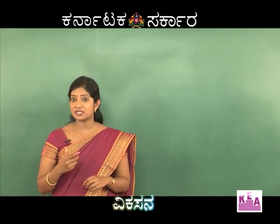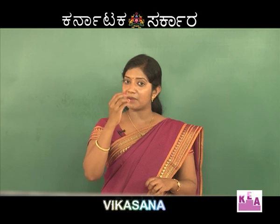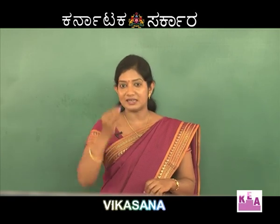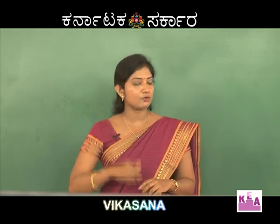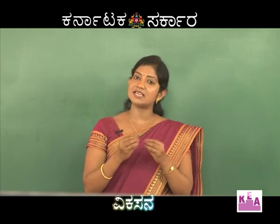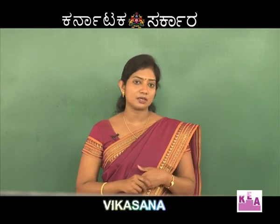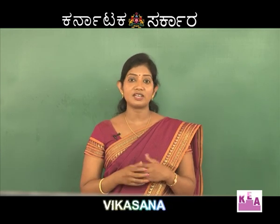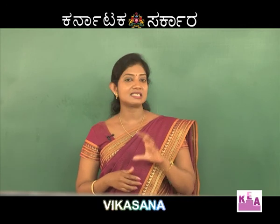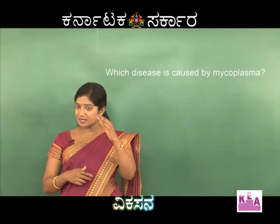I hope you know what spike inflorescence is. When there is a bunch of sessile flowers — or flowers without a pedicel — attached to the inflorescence axis, it is called a spike. Here also, since the leaves are very small and placed very close to each other, it gives the appearance of a spike inflorescence. That's why the name sandal spike disease comes. Now let's see the other options.